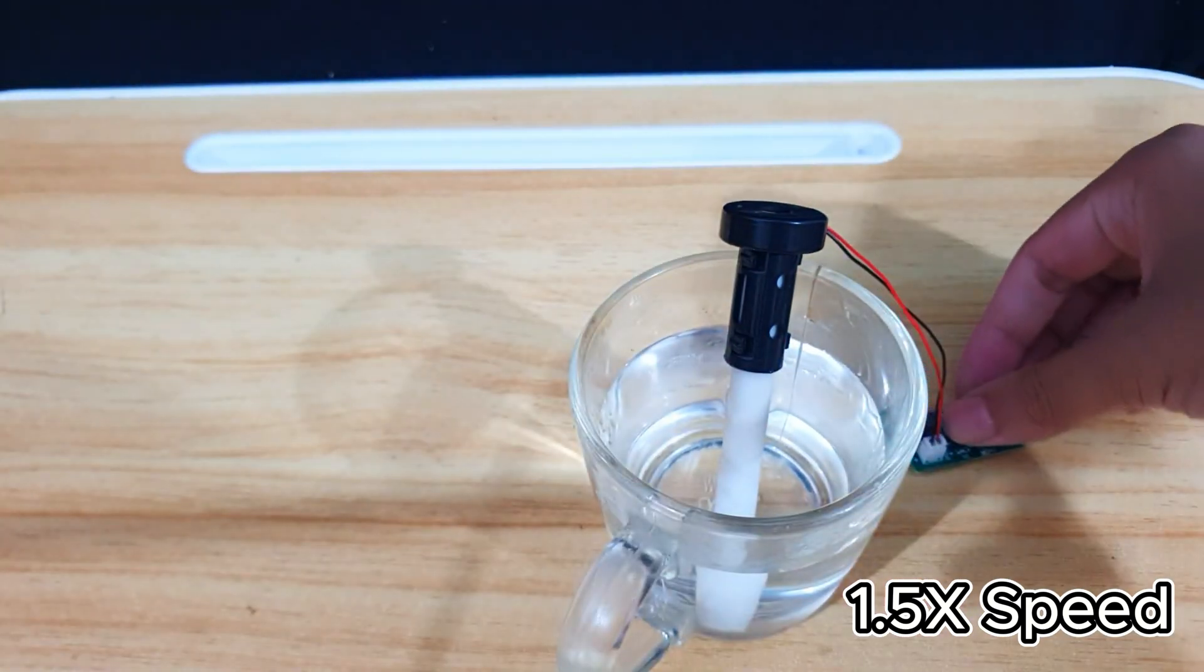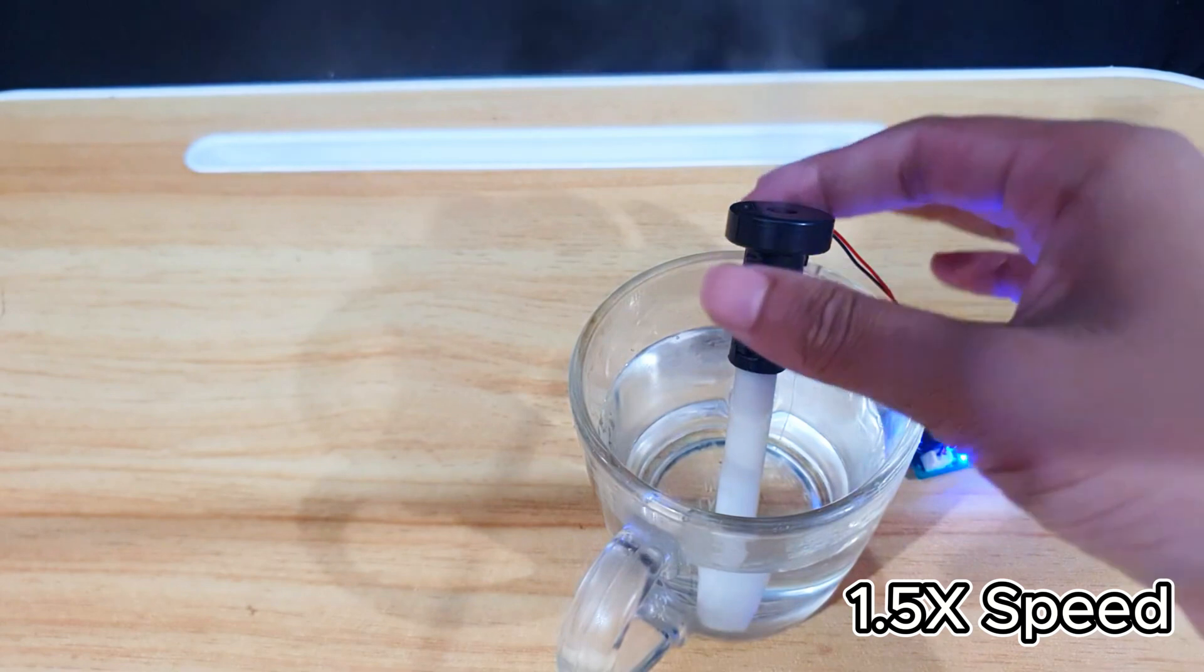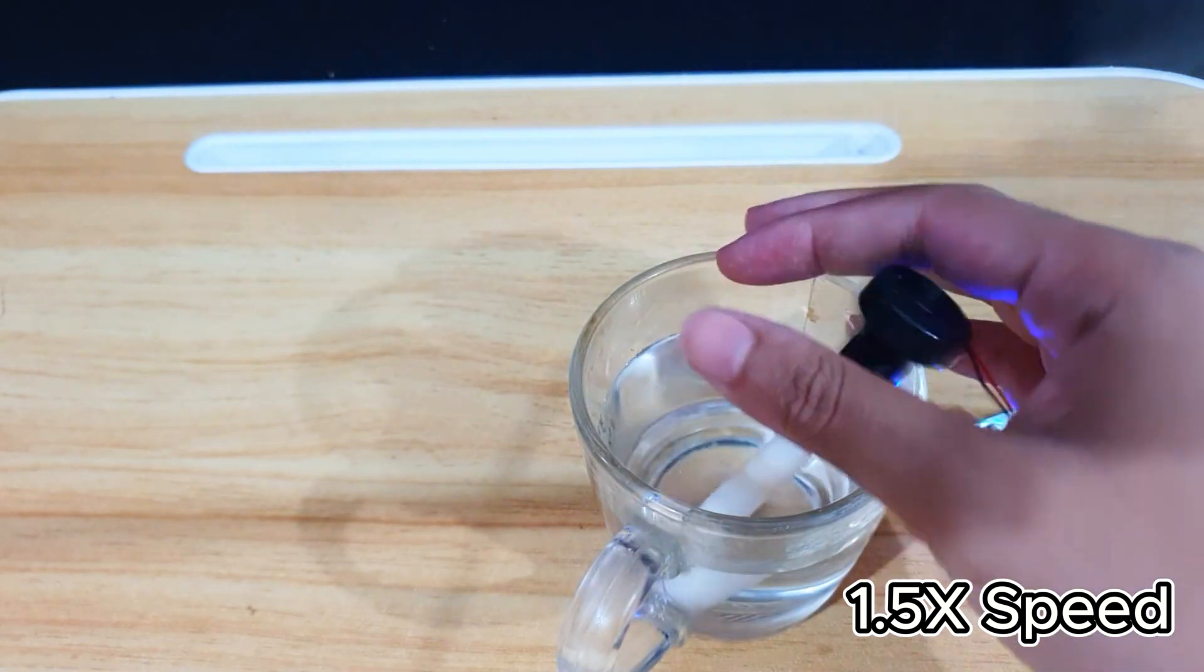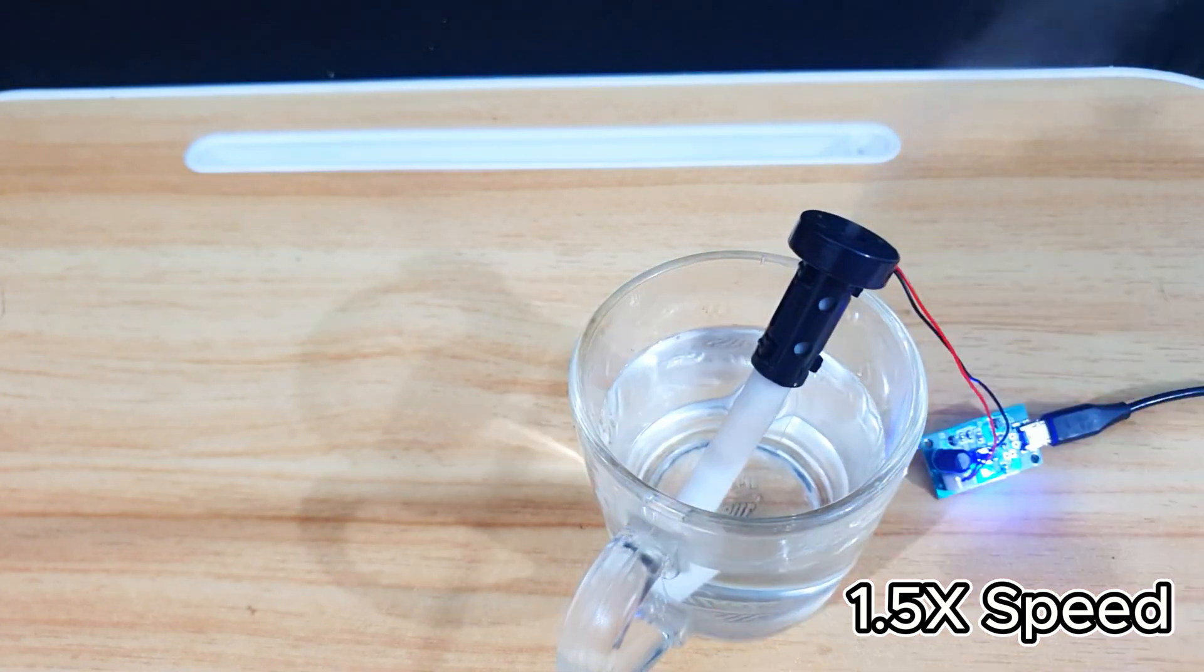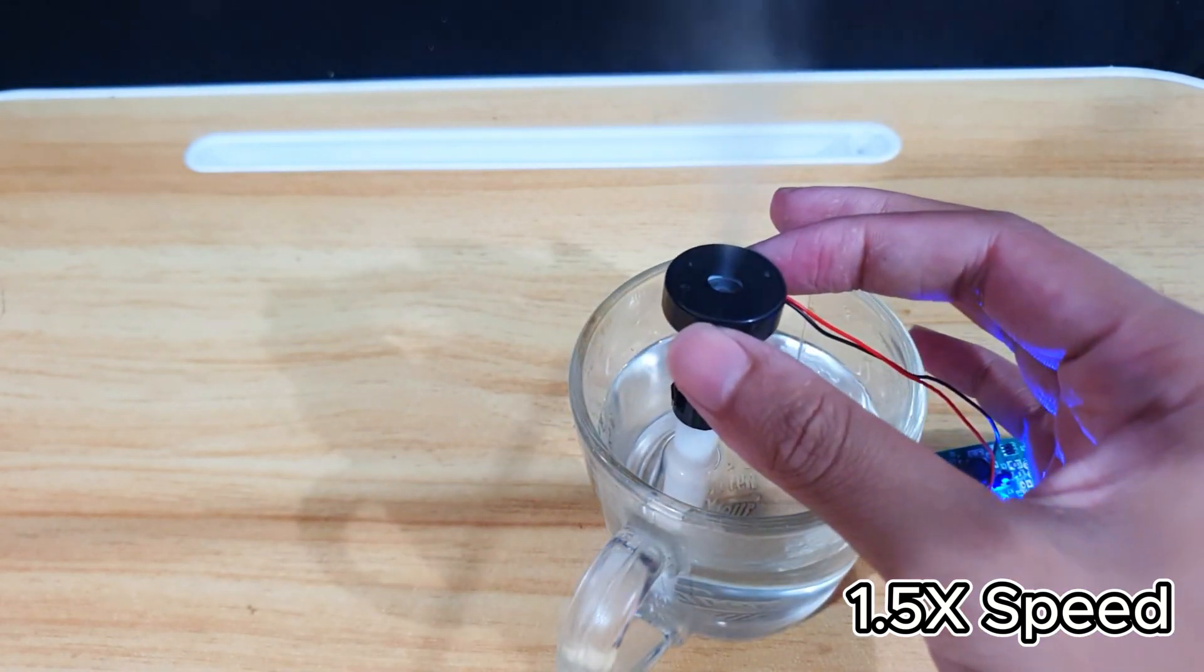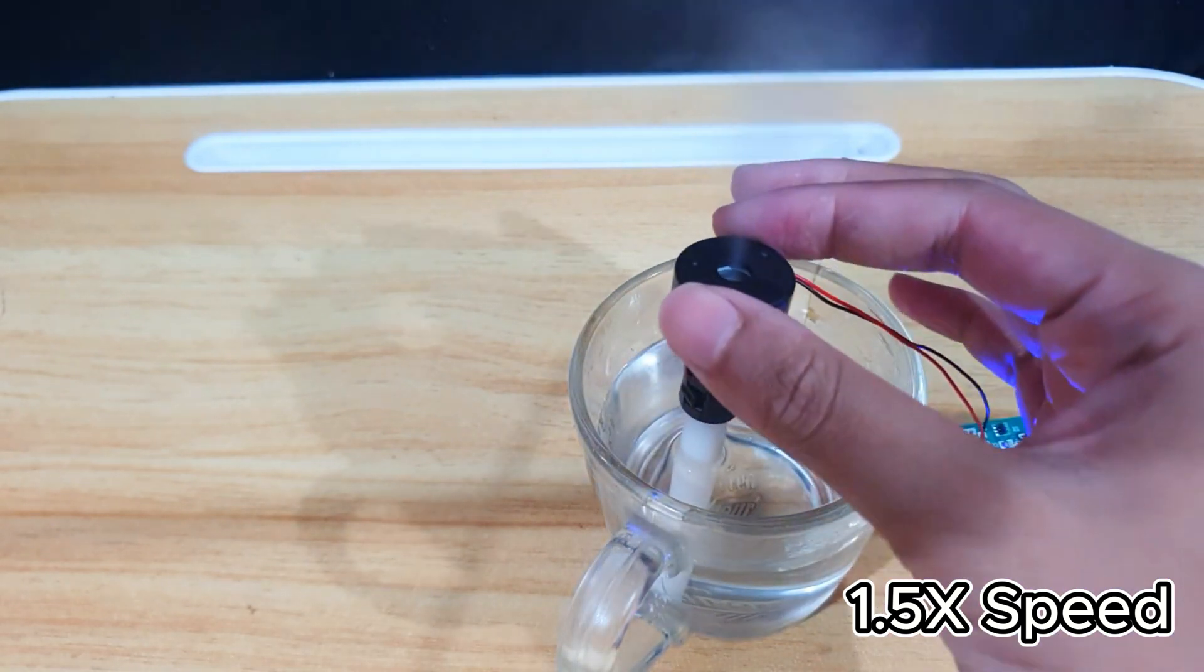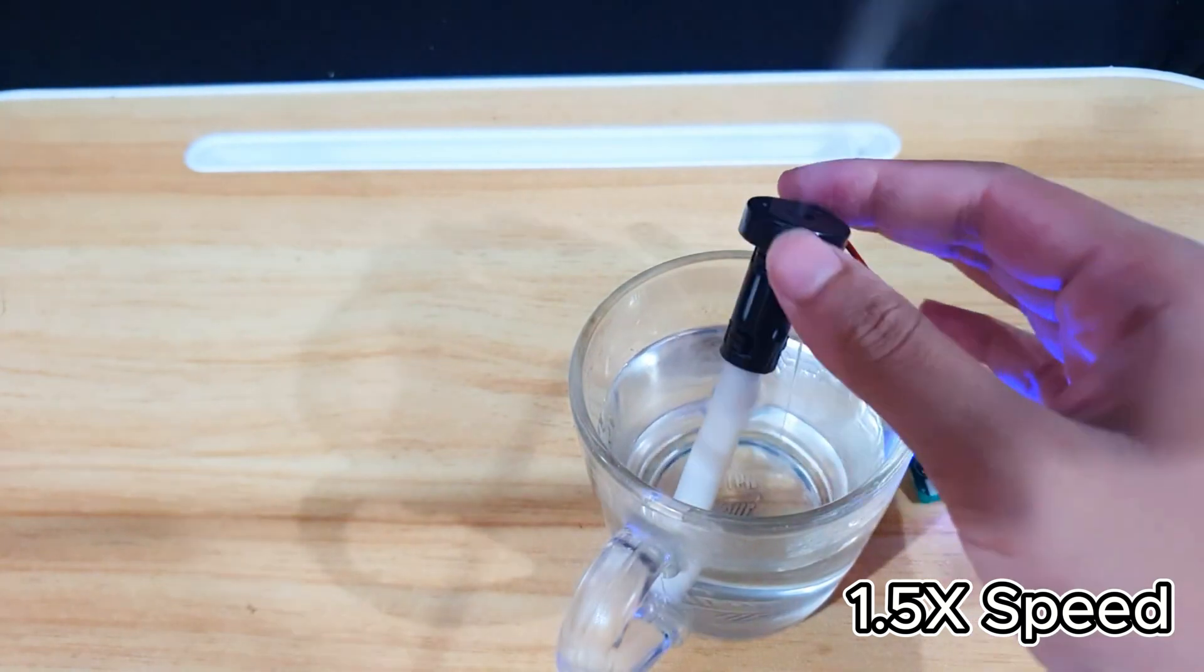Now, if I press the button, the mist maker turns on and will continue running as long as there's water in the cup. This setup is perfect if you want continuous humidity without interruptions, allowing you to enjoy a long misting session without having to constantly restart it.